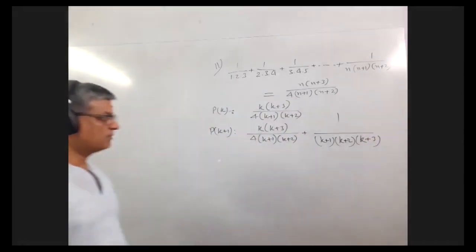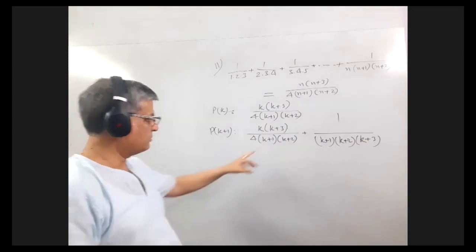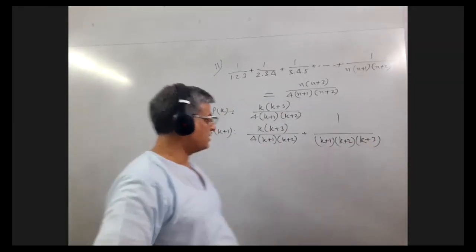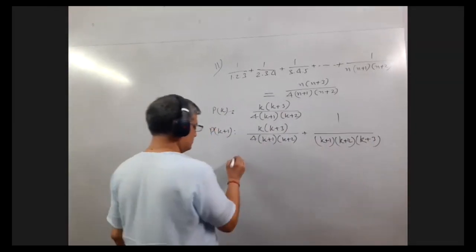Right, now carefully look, in the denominator k plus 1 and k plus 2 are common on both sides.